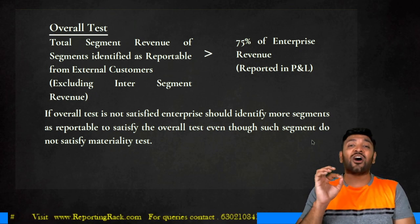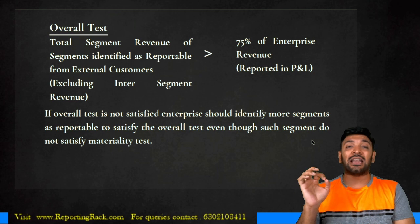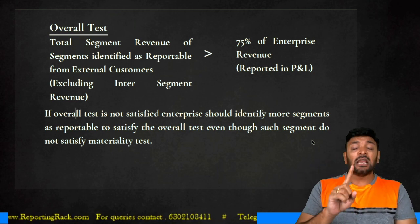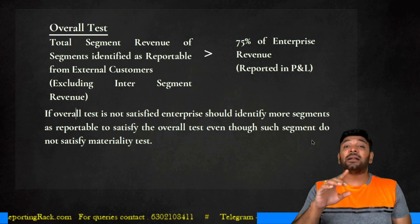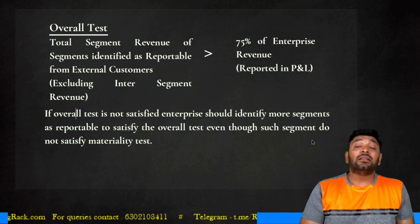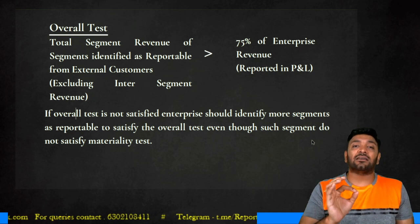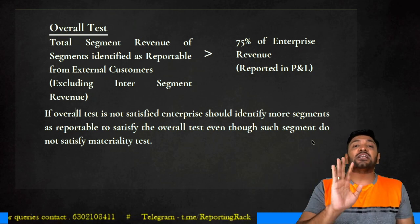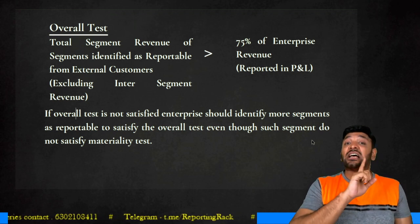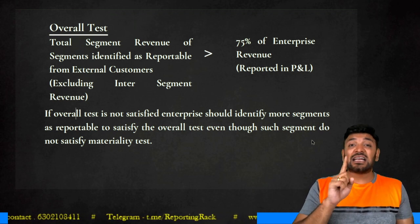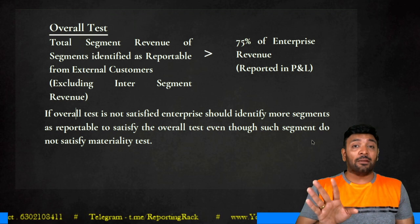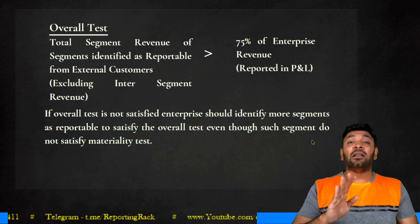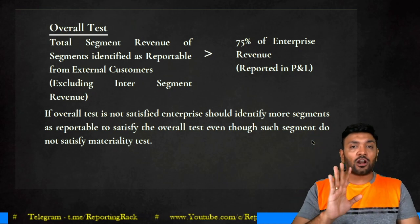There is no restriction on the number of segments to be reported under Ind AS 108. However, if your total reportable segments exceed 10, the management should assess the reasonability of the information presented. He is not saying 10 is the maximum limit — he is saying there is no limit, but if it exceeds 10, management should assess whether it is reasonable to report that many segments.